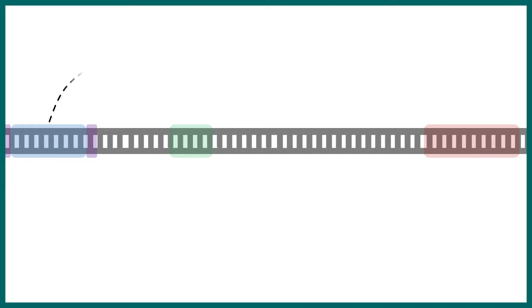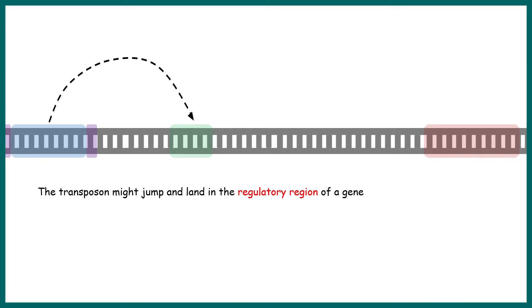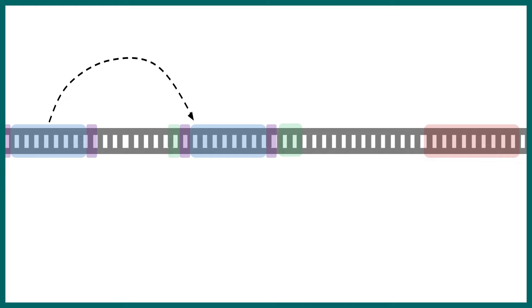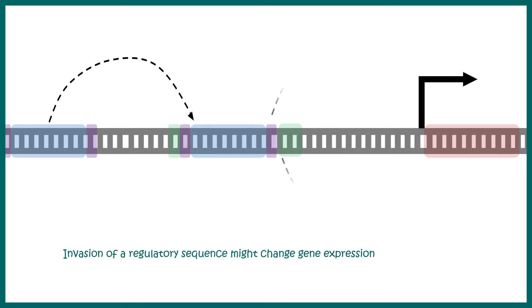There could be other consequences of this transposition. Let's say a transposon hops and lands into a regulatory sequence inside a genome. Now, this regulatory sequence controls transcription. So, obviously, after integration into a regulatory sequence, it can positively or negatively regulate gene expression from a nearby gene. So, obviously, transposon has activity on gene expression as well.